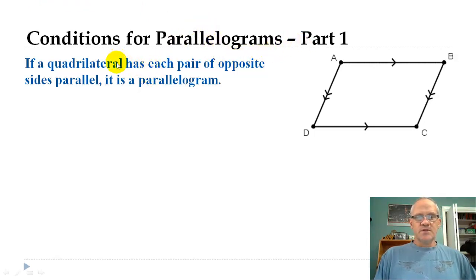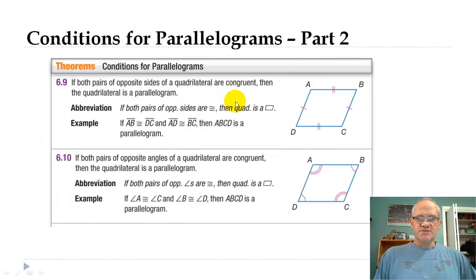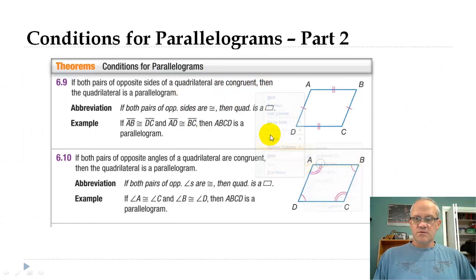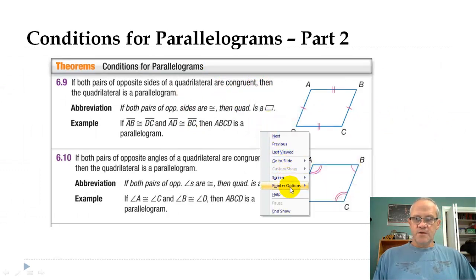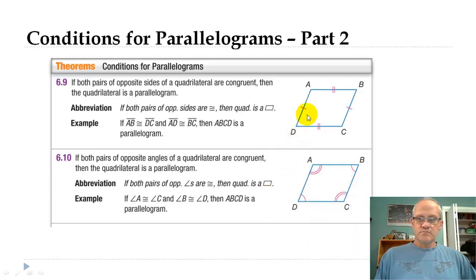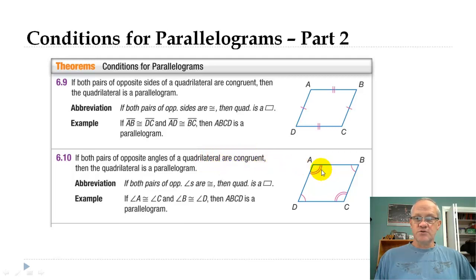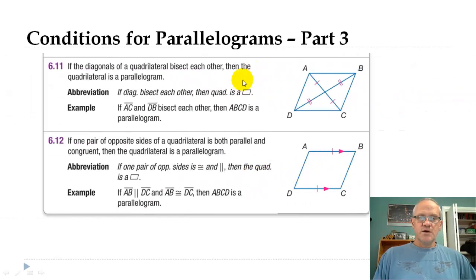First: if a quadrilateral has each pair of opposite sides parallel, it's a parallelogram — just like we talked about before. Second, if the opposite sides of a quadrilateral are congruent, then it's a parallelogram. Third, if the opposite angles are congruent, then the quadrilateral is a parallelogram. We've also talked about that before. And fourth, if the two diagonals bisect each other, then it's a parallelogram.